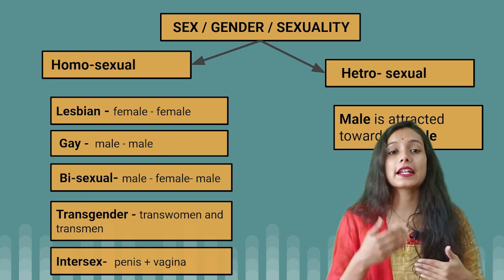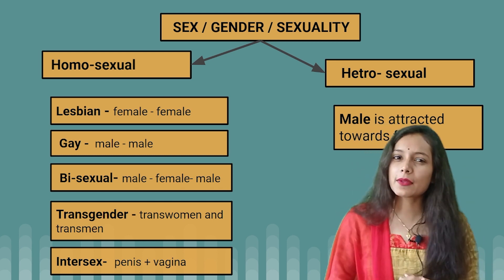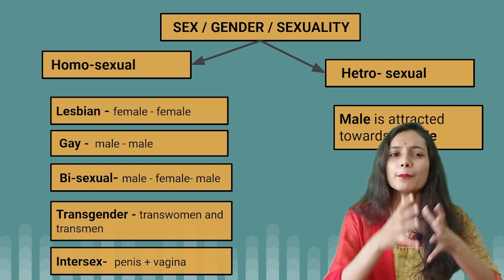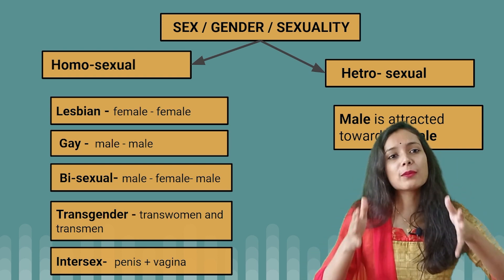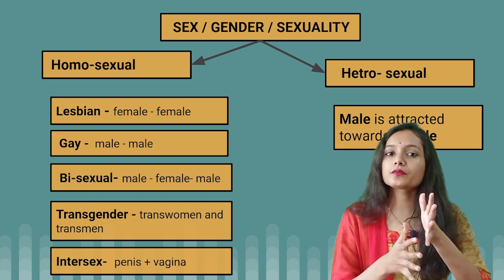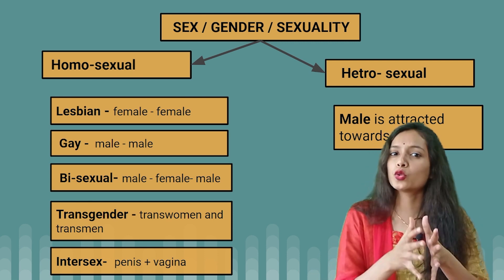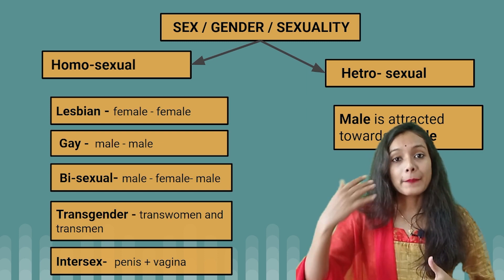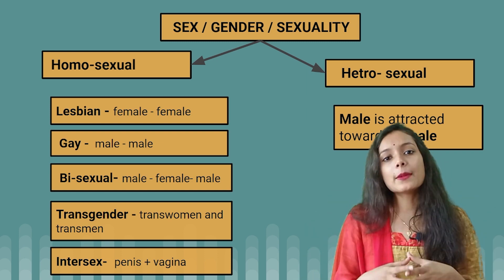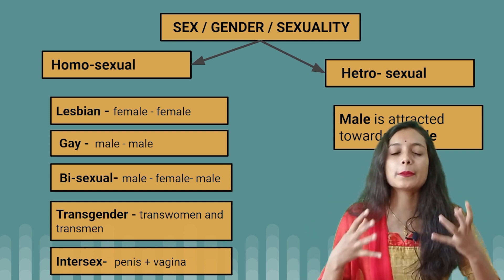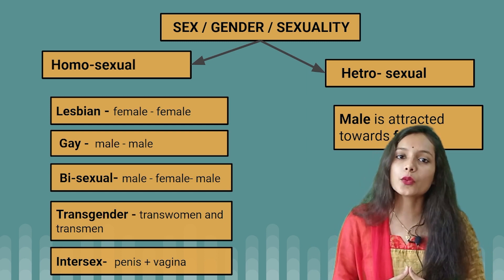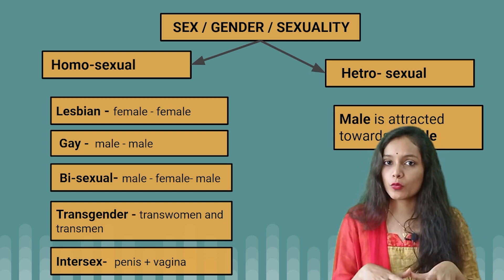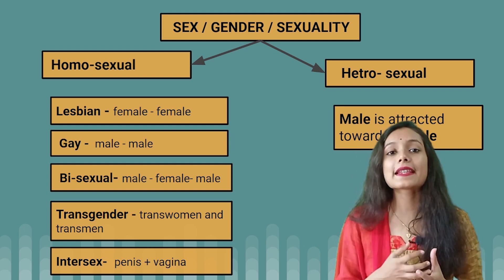Intersex — what does intersex mean? Inter means between — something in between male and female. In intersex individuals, both a penis and vagina may be present, but neither is in a fully developed form. We call these people intersex.